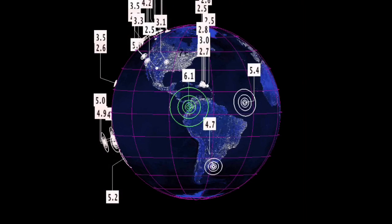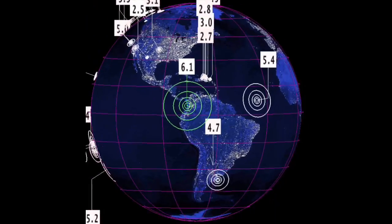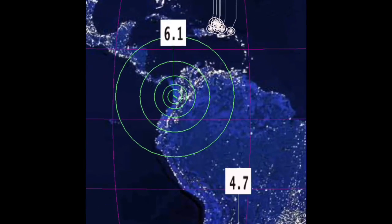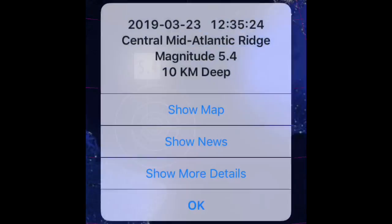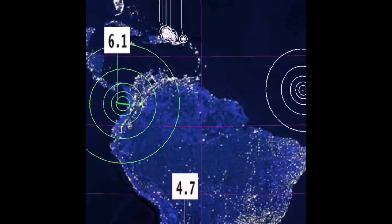We just had a 6.1 earthquake in El Dovio, Colombia at 113 kilometer depth. That's a pretty sizable earthquake, as well as the 5.4 going off in the central mid-Atlantic ridge.